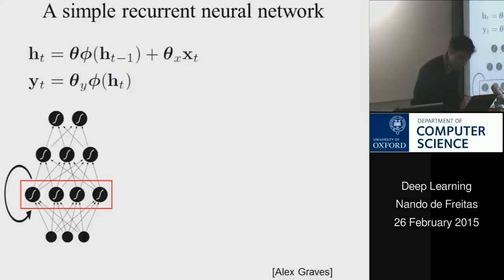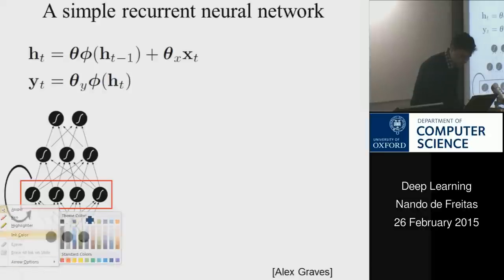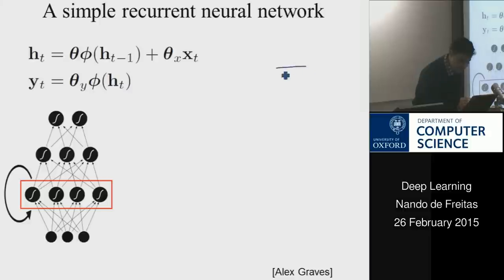and I have an output layer Y. So X maps to H, H maps to Y, but H also maps to itself. So one way to draw this network